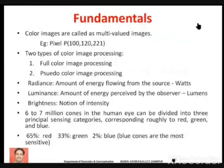Color image processing. Till now we have discussed about grayscale image processing, where each pixel is associated with a single value which represents its intensity. We have seen that if we have an 8-bit image, its intensity can lie between 0 to 255, where 0 indicates dark color and 255 indicates white color. However, to represent color images, we have to use multiple values for a single pixel. In the case of a color image, each pixel is associated with multiple values.